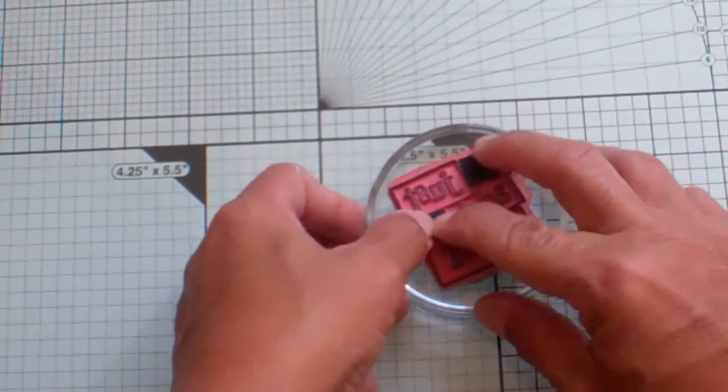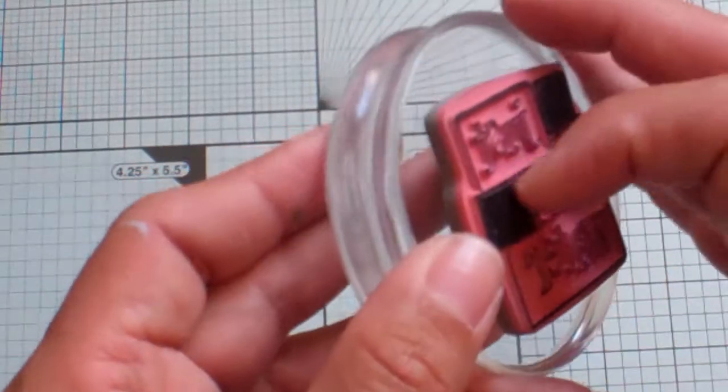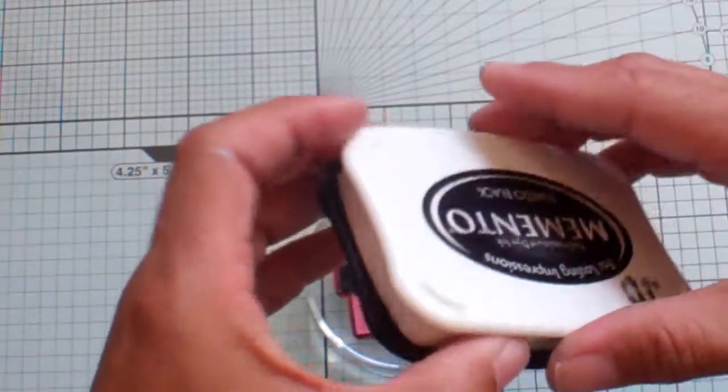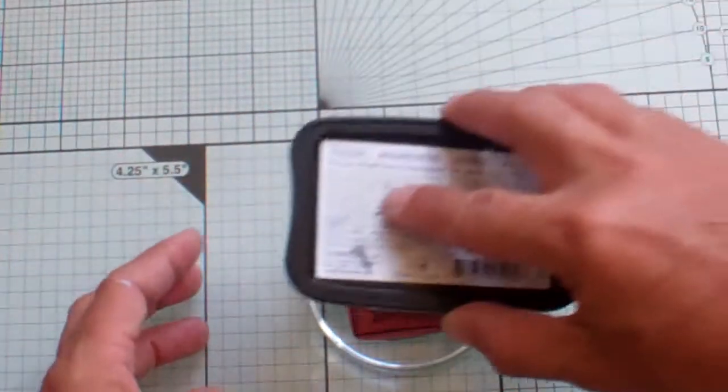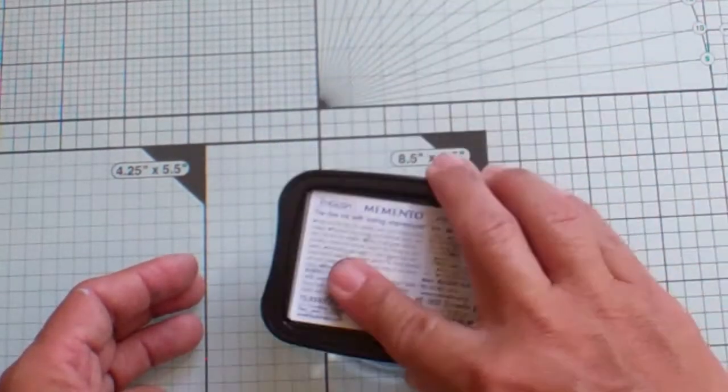It's all black because I've already used it several times, playing with it. Make sure it's not going to fall off, then we're going to take our Memento ink, or whatever ink you want to use. I like Memento a lot.